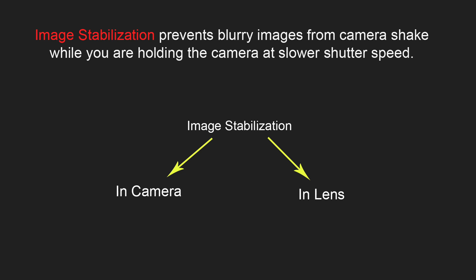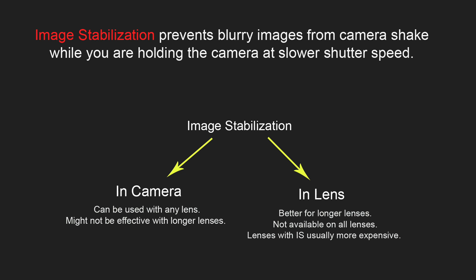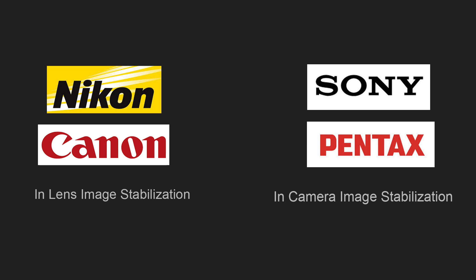There are two types of image stabilization: in-camera image stabilization and in-lens image stabilization. The advantage of in-camera image stabilization is that you can use it with a variety of lenses without having to have image stabilization inside each lens, though it might not be effective with some longer lenses. In-lens image stabilization can be a better idea for longer lenses, though not all lenses have it and lenses with image stabilization are usually more expensive. Nikon and Canon are big on in-lens image stabilization, while Sony and Pentax prefer in-camera image stabilization.